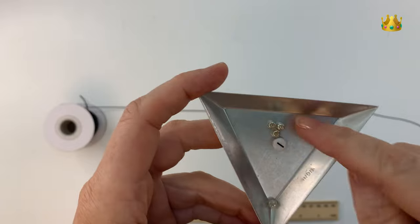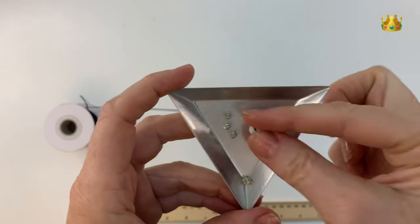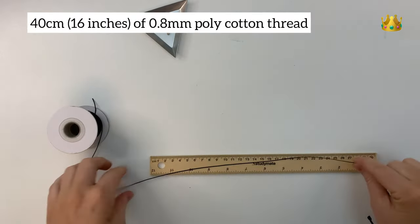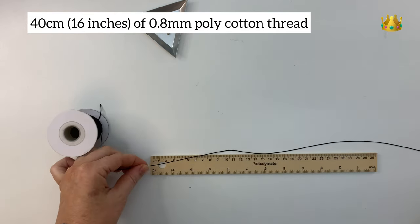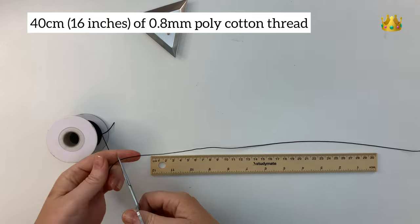For our design today we've got four seed beads and one alphabet letter bead. And then we're using 0.8 millimeter polyester cotton twine and we're using 40 centimeters of that.